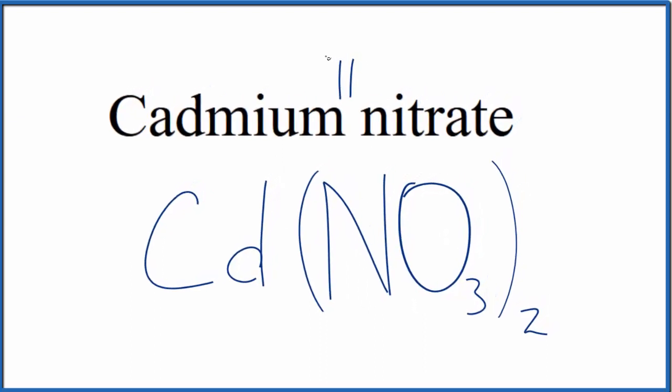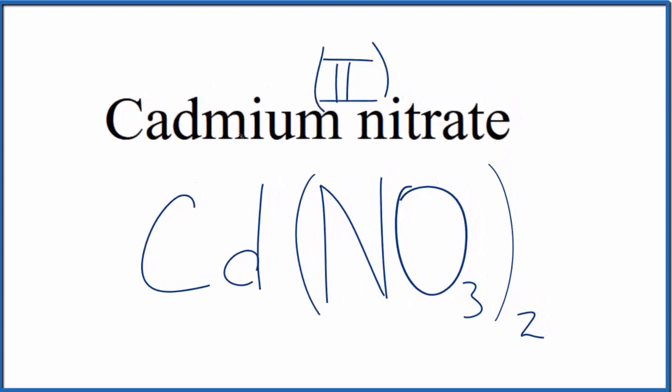Sometimes you'll see a Roman numeral II put between the names because this is a transition metal. Cadmium is a transition metal. That's because the cadmium is 2 plus. But since the cadmium is almost always 2 plus, often you won't see this written.